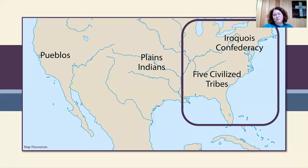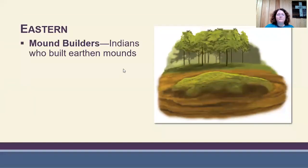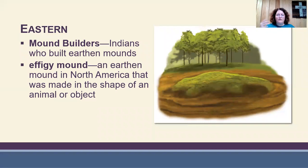Looking at the Indians in the eastern portion of the United States — these would be the Indians that live where we live now. You have the Mound Builders, who built earthen mounds. The mounds were often used as gravesites or temples. Some of them were effigy mounds, meaning they were built in the shape of an animal or object. There are Indian mounds here in Georgia and throughout the eastern portion of the United States, such as Rock Eagle.